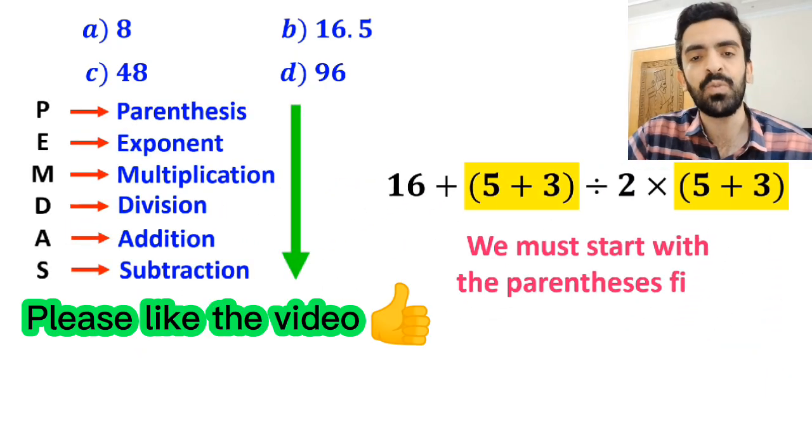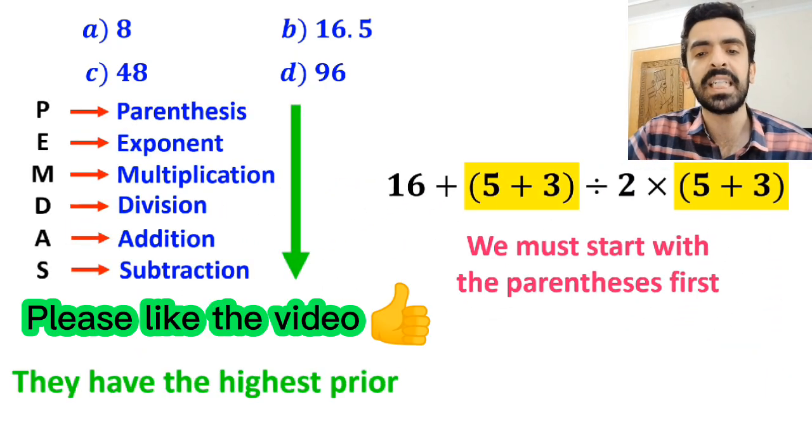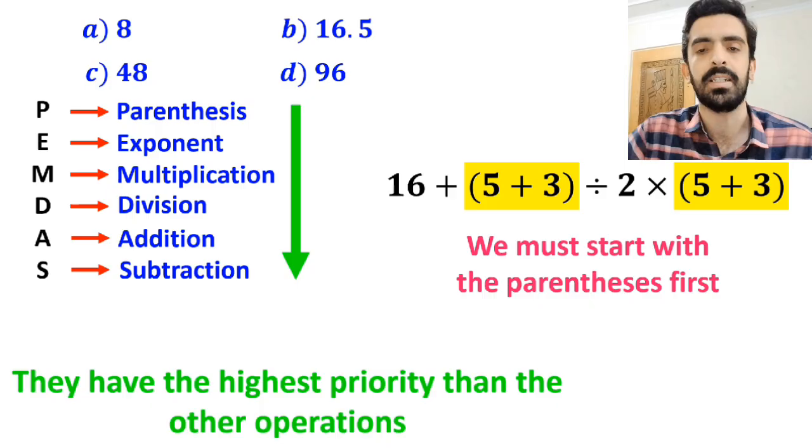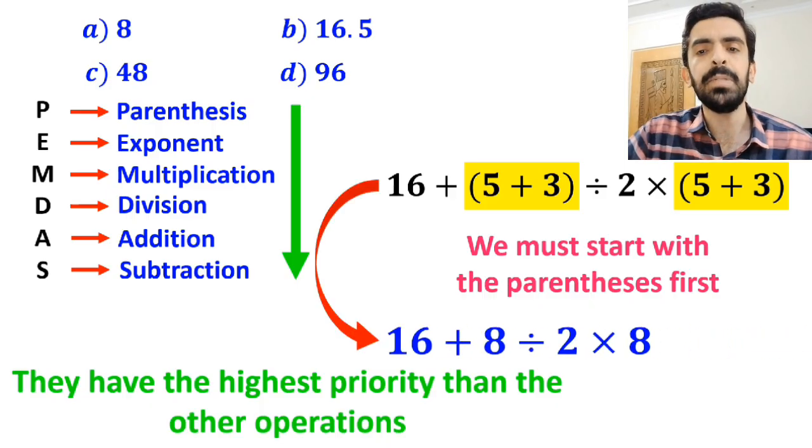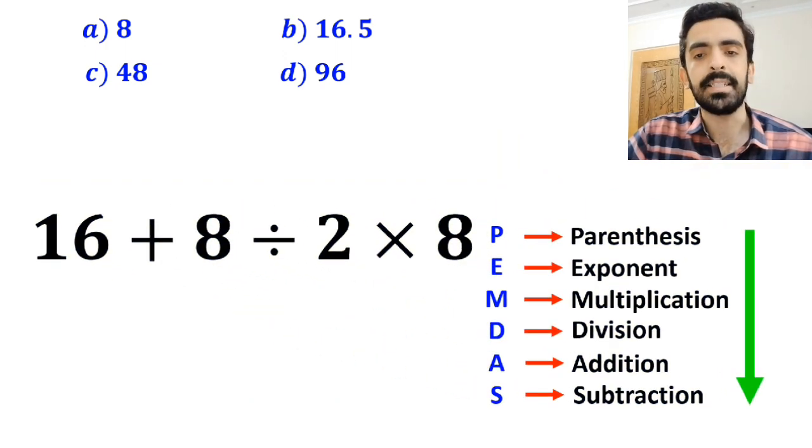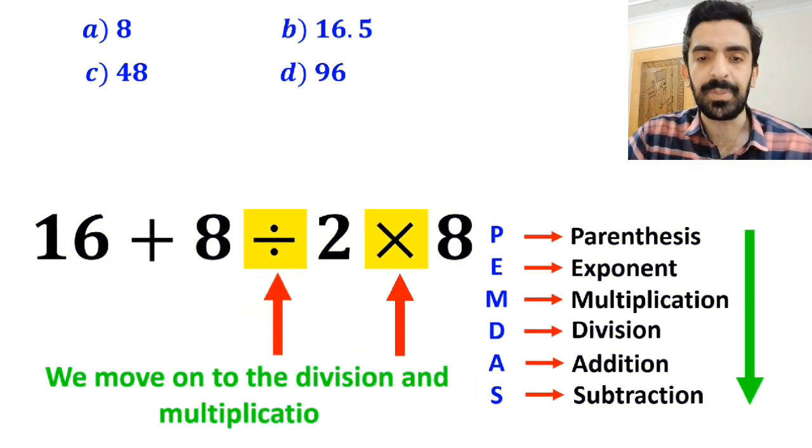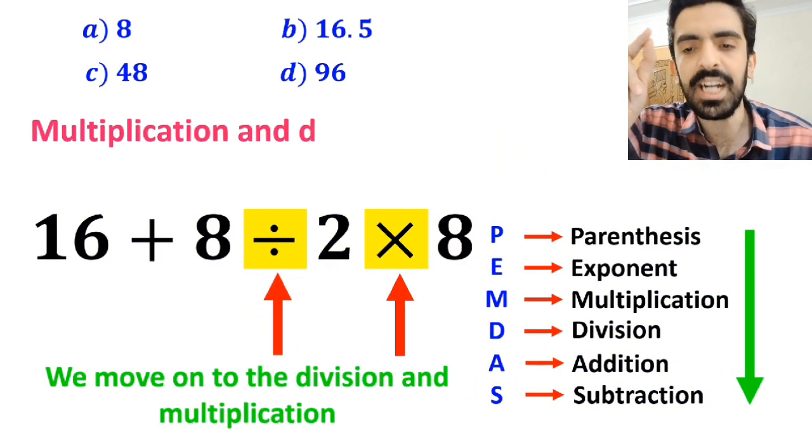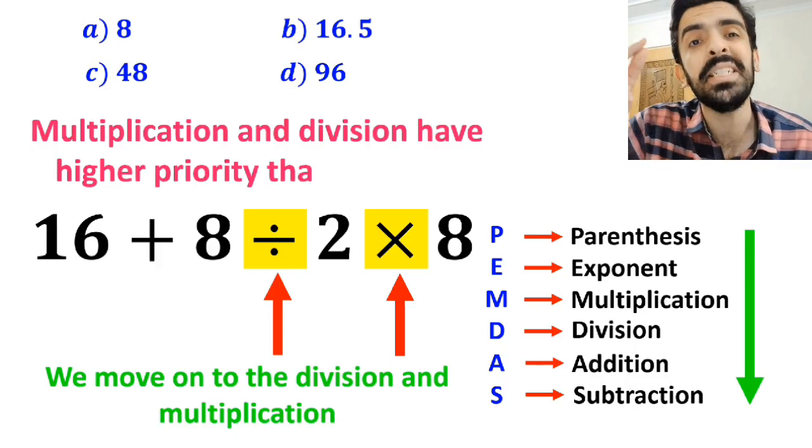We must start with the parenthesis first because they have the highest priority than the other operations. So, this expression simplifies to 16 plus 8 divided by 2 times 8. In the next step, we move on to the division and multiplication, because multiplication and division have higher priority than addition.